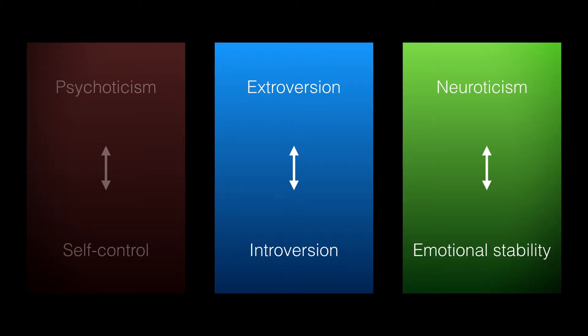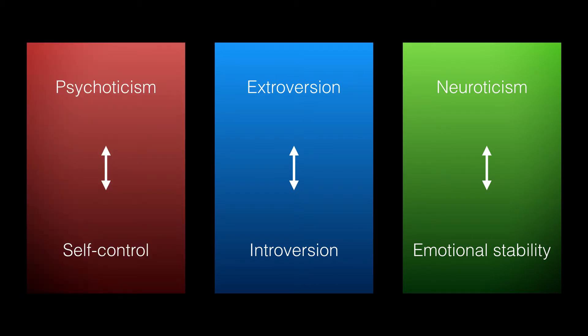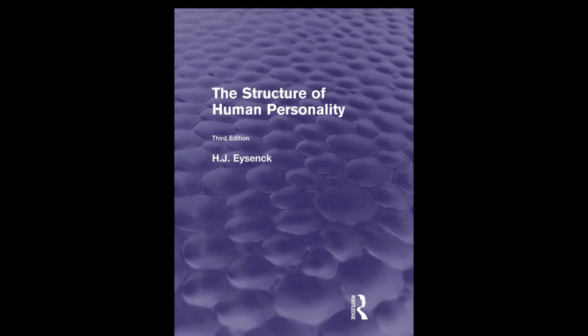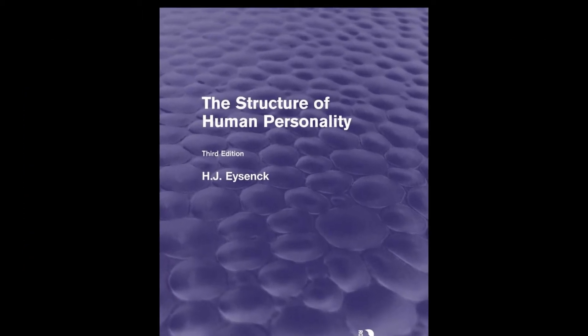He originally proposed that there were two main personality dimensions: extroversion and neuroticism. And later he added a third dimension of psychoticism and generated the PEN model. This is a structural model of personality where these dimensions are higher-order theoretical constructs that emerge out of lower-level facets for each dimension.